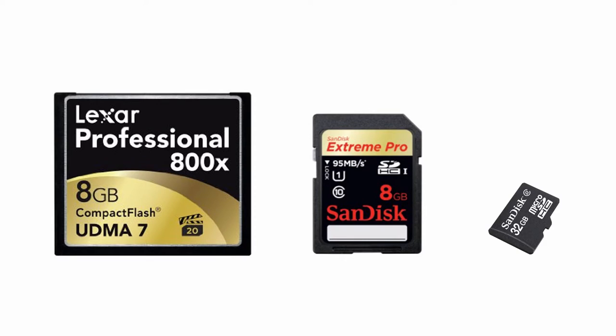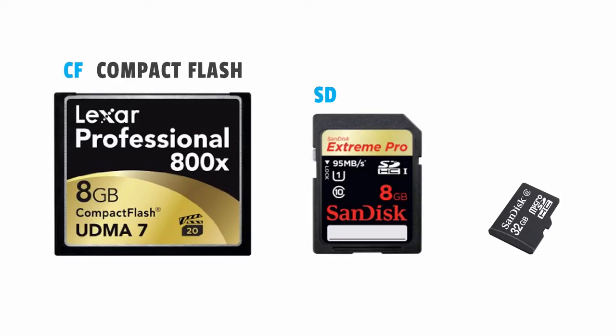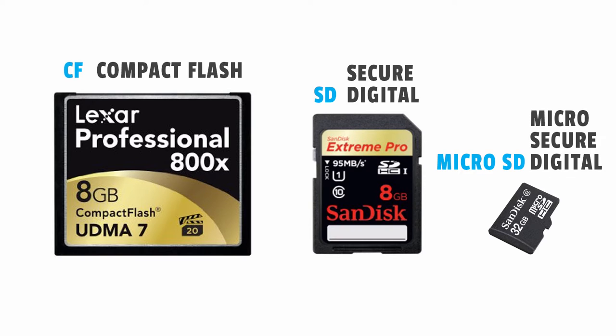Let's start by talking about what are some of the different memory cards out there. For most of us, there are three types. We have CF cards, which stand for compact flash cards — those are the big, bulky square cards you see pro photographers using. More average consumer cameras take SD cards, which stands for secure digital. And then you have the third option: micro SD cards, the little mini SD cards used for things like GoPros or smaller cameras.